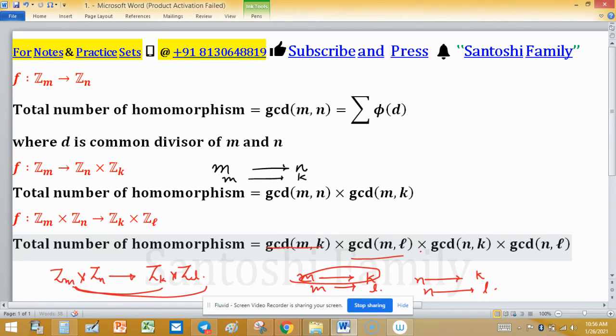Times gcd(n,k) times gcd(n,l). These three formulas are very important when you are learning group theory or abstract algebra.